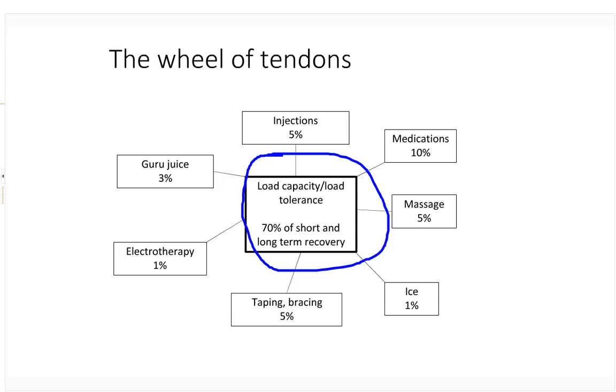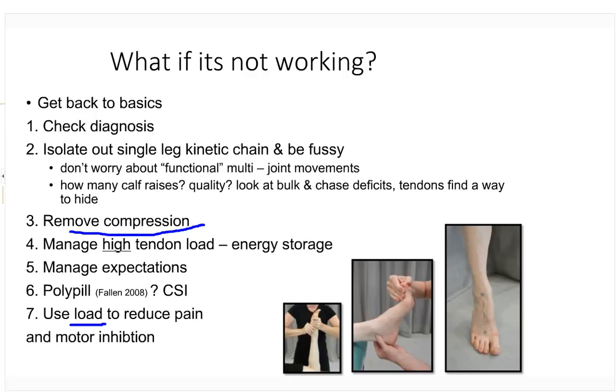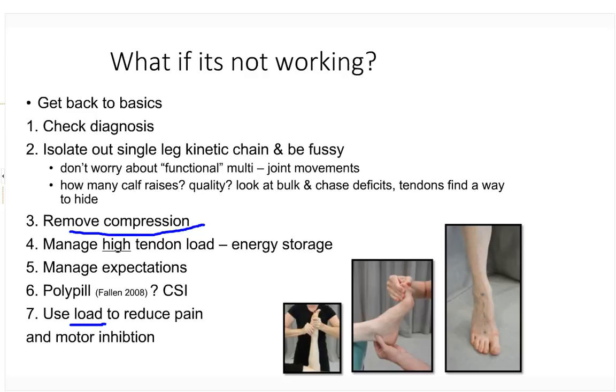For that paratendon person, I wouldn't let them do calf raises and load that moves the sheath — my loading modification takes away those loads. Versus someone with a problem within their tendon, you'd actually get them started on strength work. We get people to listen to their tendon — we want to see an increase in load with a decrease in pain. If they're increasing the load and the pain stays the same, that's still a win. When it's not working: get back to basics, recheck the diagnosis, be incredibly fussy, remove all compression, understand high tendon load within their week, and use isometric load to reduce pain and motor inhibition.